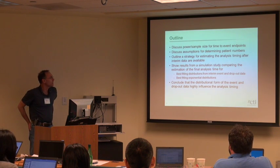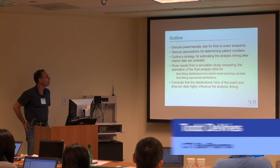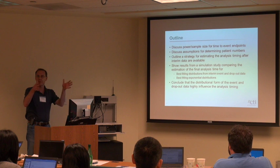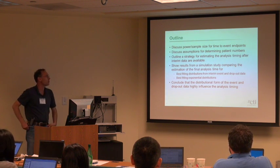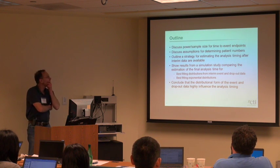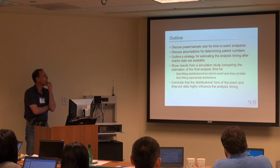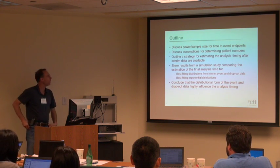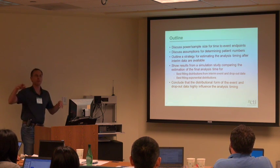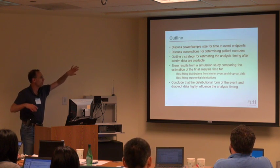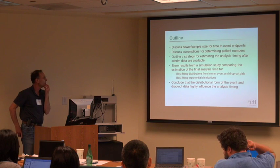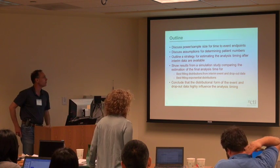In this talk, I'll briefly go over some standard power and sample size methods for time-to-event endpoints, then go into the assumptions used to derive the patient numbers needed to realize those events at a certain time point. I'll outline a strategy for estimating analysis timing once interim data are available, and show results from a simulation study comparing best-fitting distributions to the exponential, concluding that distributional form matters a lot.